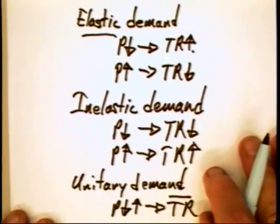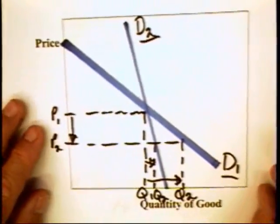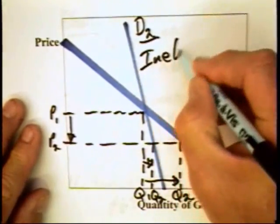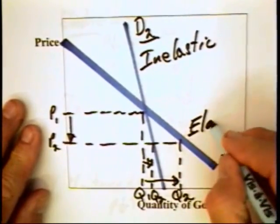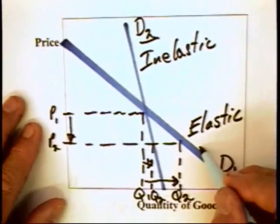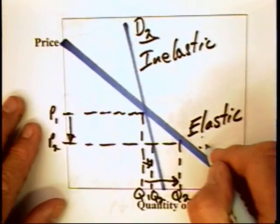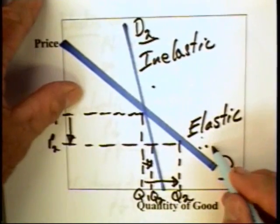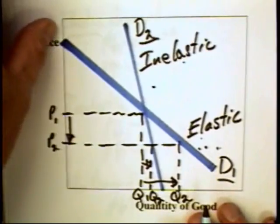While this helps us, it suggests that in the case of this graph, this demand curve is inelastic and this demand curve is elastic, simply because consumers are relatively more responsive under this demand curve than that one. And it's more likely that a price reduction will lead to an increase in revenue under the elastic curve than the inelastic one.